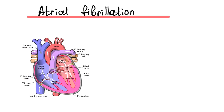Atrial fibrillation is the most common arrhythmia. It is characterized by disorganized atrial electrical activity and contraction. The focal left atrium activity involves and circulates around the pulmonary vein orifice. Atrial fibrillation is initiated by a premature atrial complex, and the substrate relates to left atrium dilatation and fibrosis.